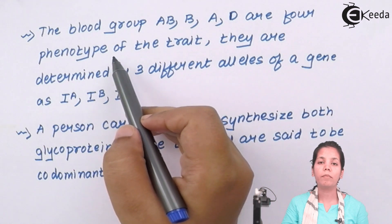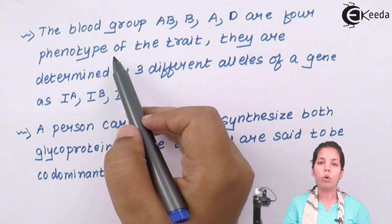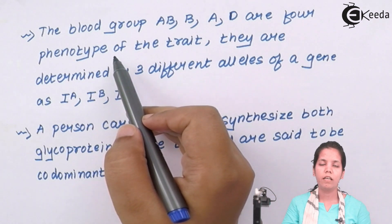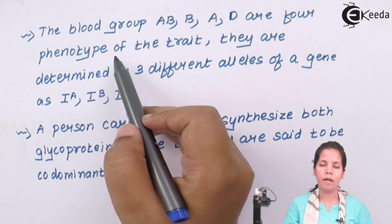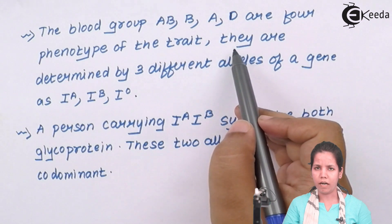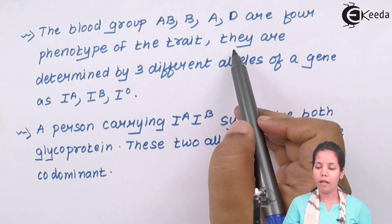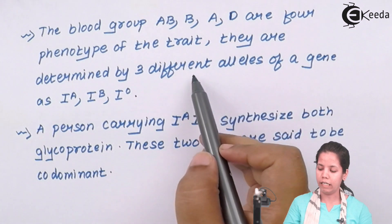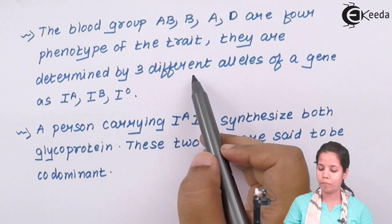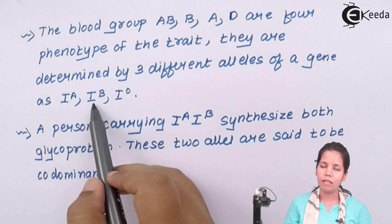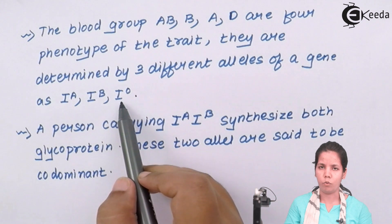They would undergo lysis at a rapid speed if you donate an incompatible blood group from one individual to another individual. Now all these blood groups are determined by three different sets of alleles, and these three sets are IA, IB, and I0 or IO, you can say.